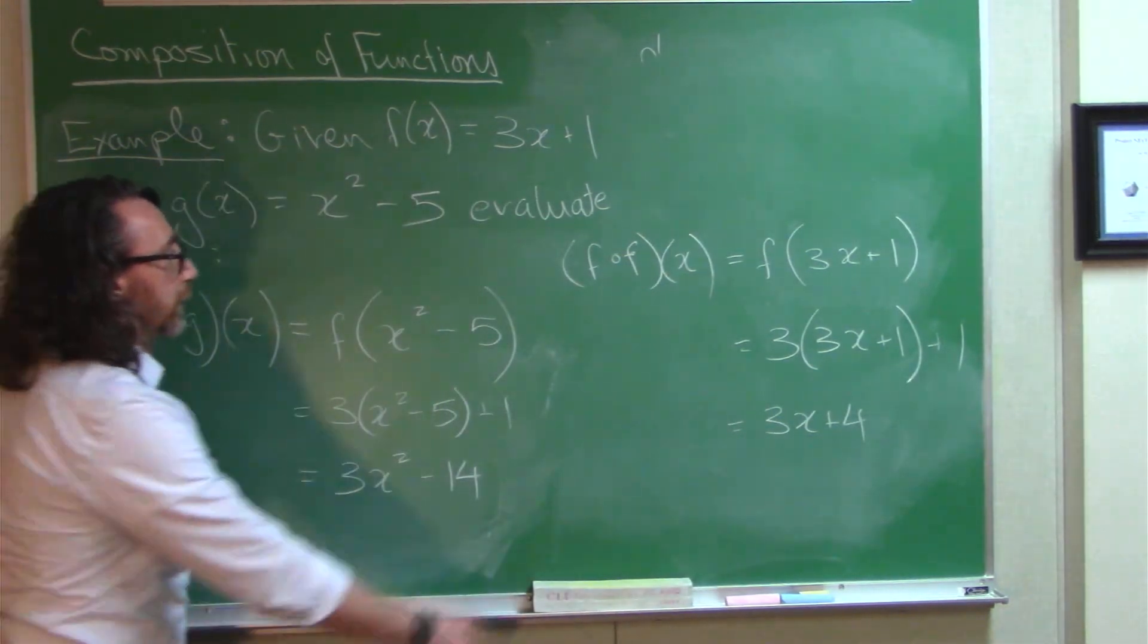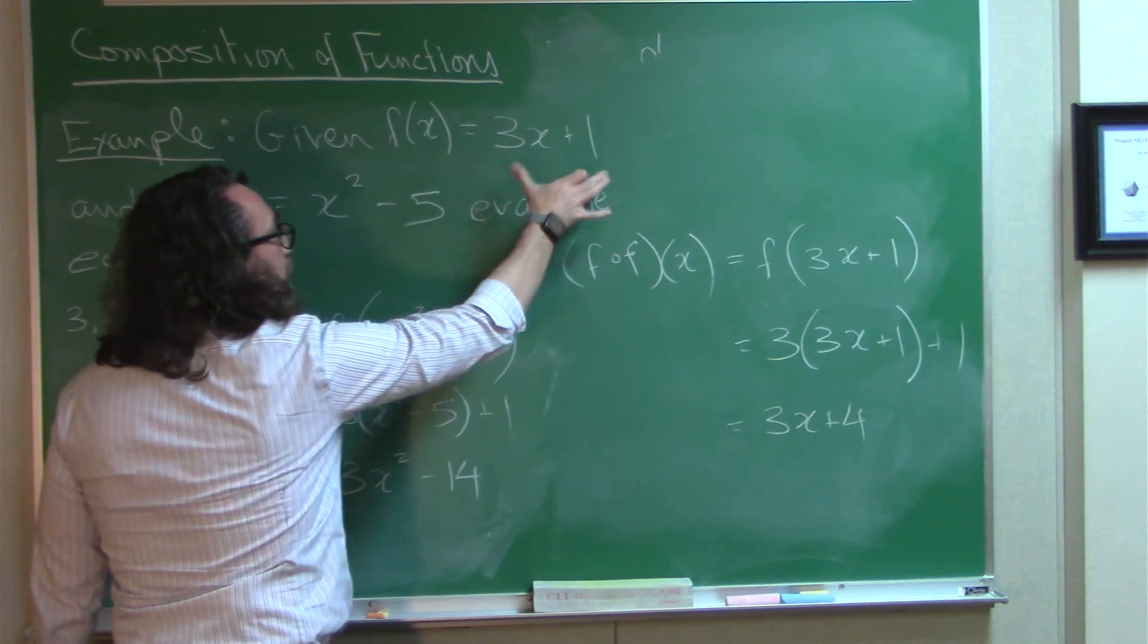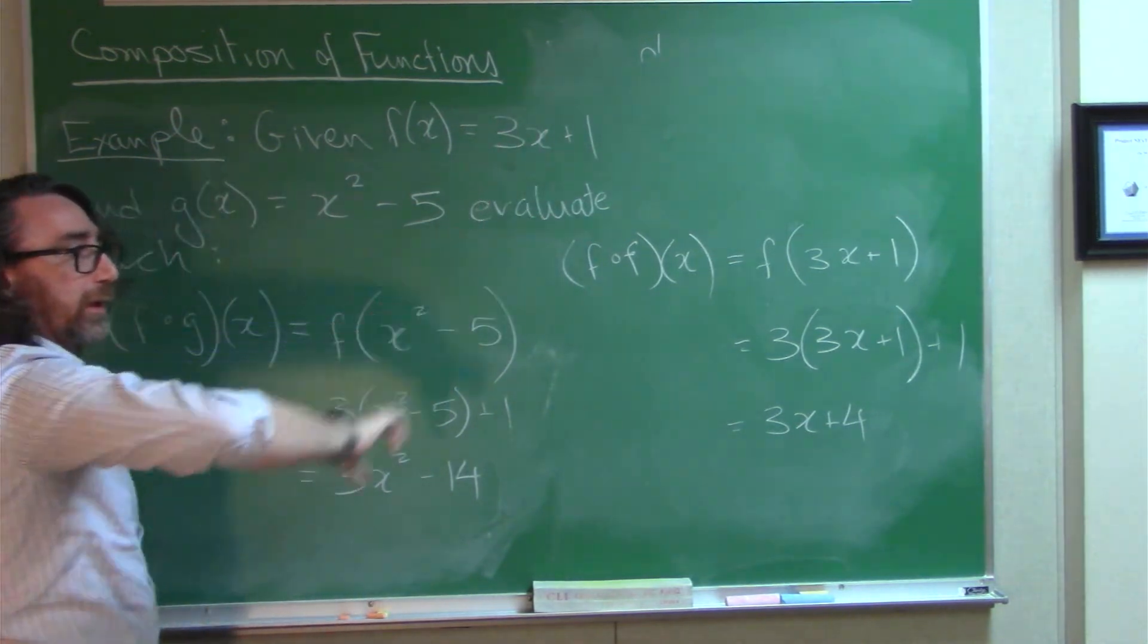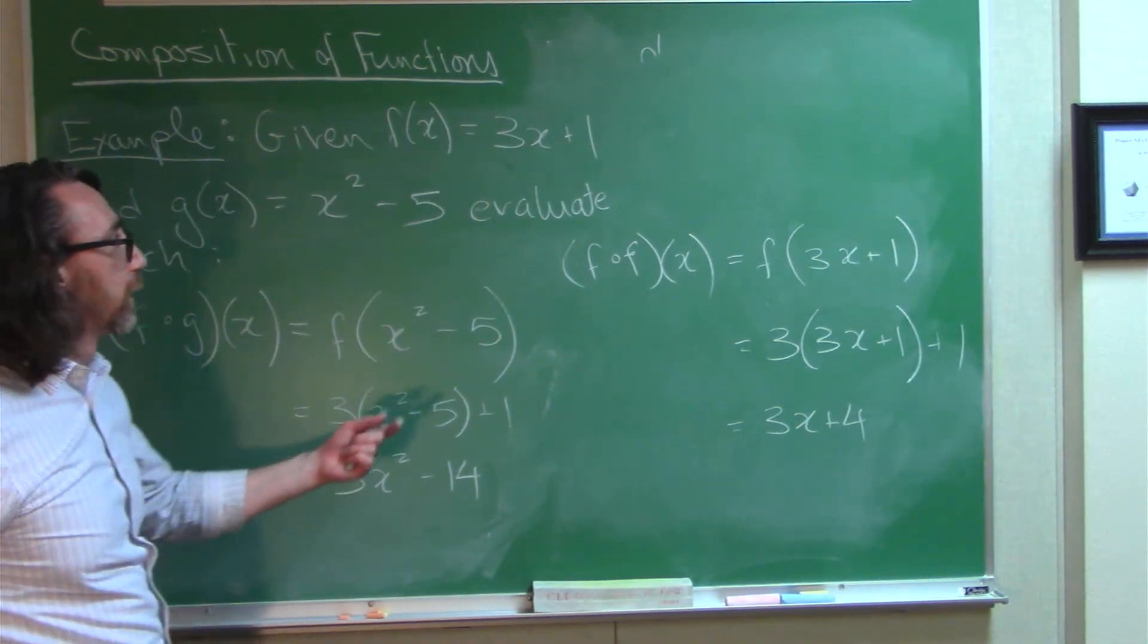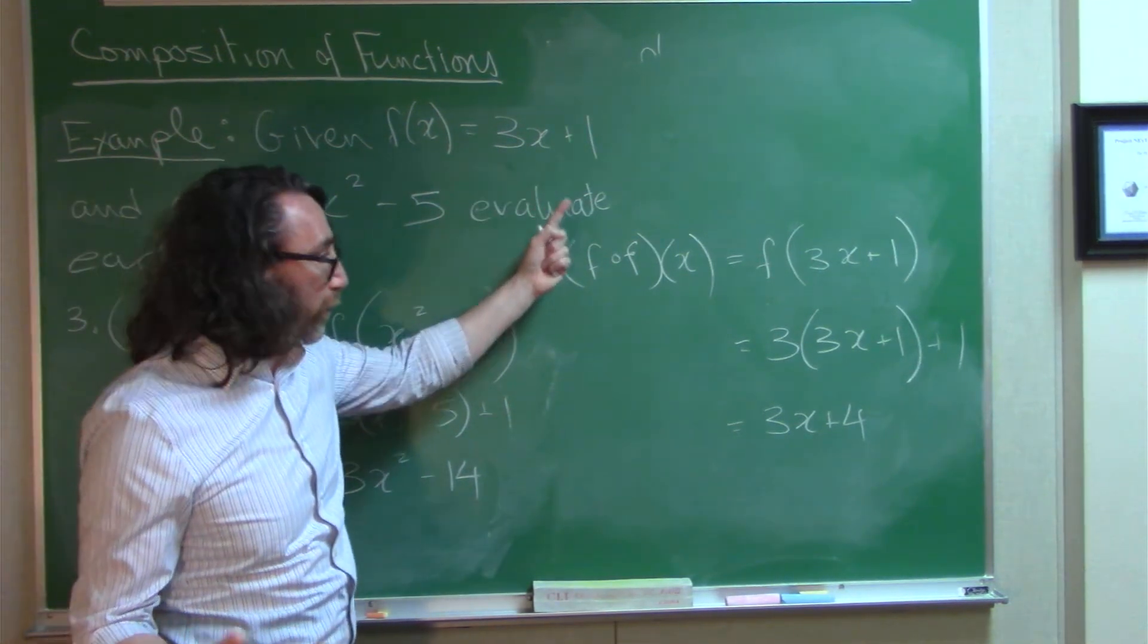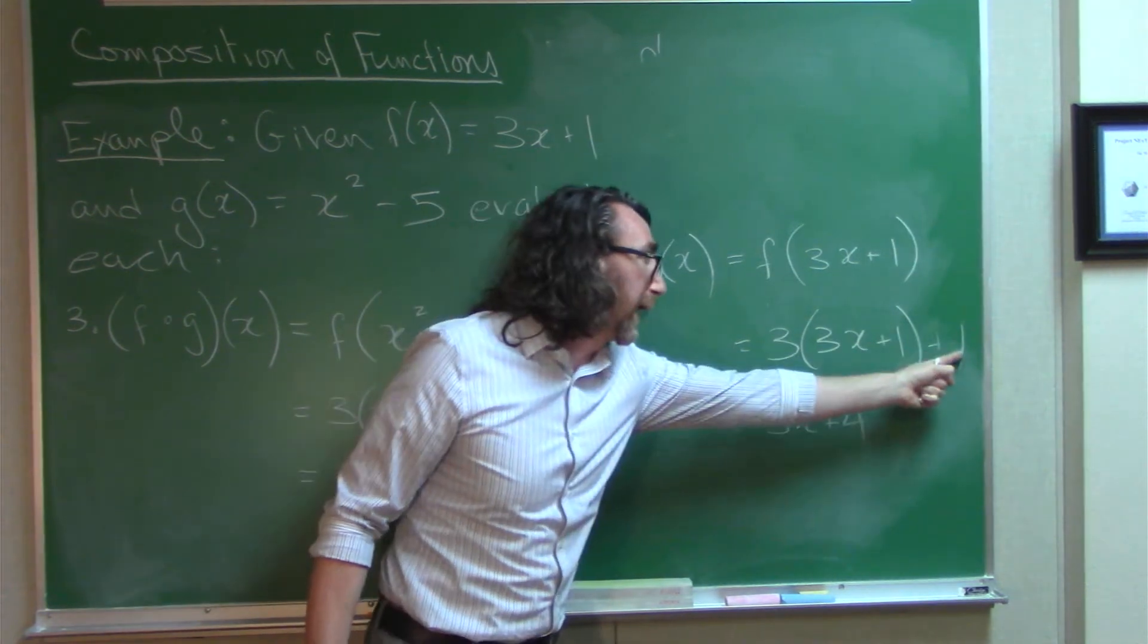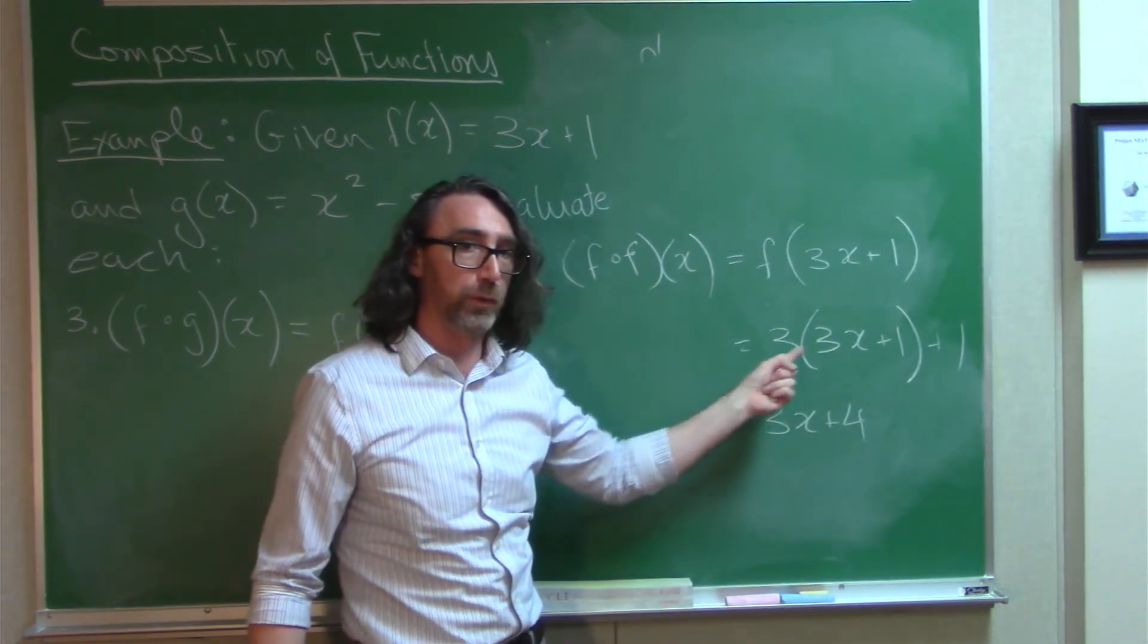And we get this. Okay, so you take X, put it in F. It spits out that. You take that, put it in F. Now, when I say put it in F, well, the rule for F tells you what to do with the input, right? It says multiply whatever you're given by 3. We were given this, so we multiply by 3, and then add 1. That's why we get a 4 here, because we distribute.